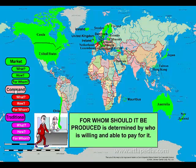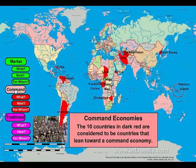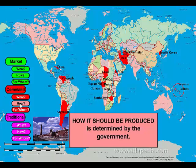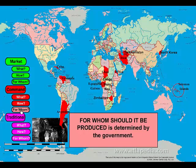The countries that lean toward a command economy are these 10 countries. You can go ahead and stop the video and look at these 10 countries that lean toward a command economy. What should be produced is determined by the government. How it should be produced is determined by the government. And for whom should it be produced is determined by the government.